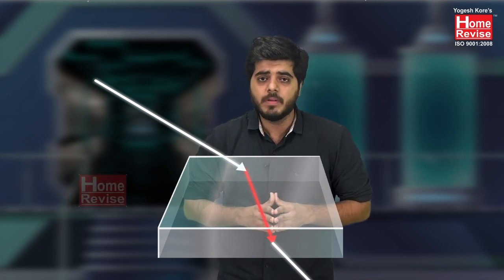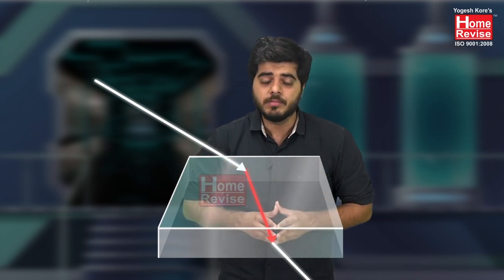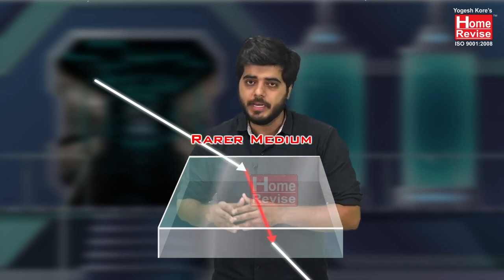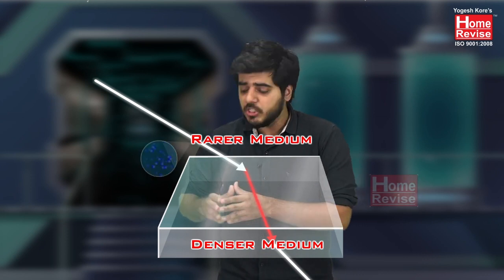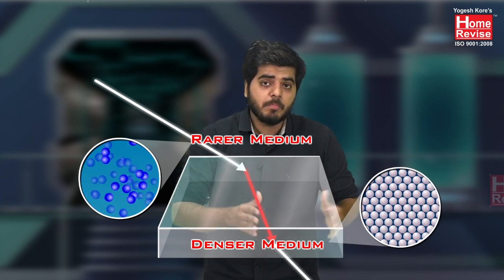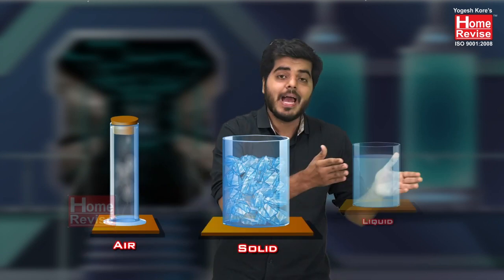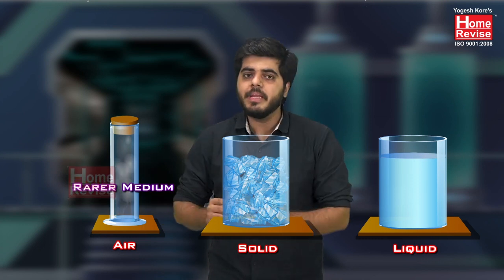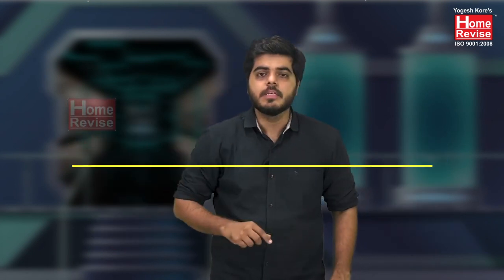When light bends while traveling from one transparent medium to another, what do we understand by transparent medium? Transparent medium is classified into two types: rarer medium and denser medium. Rarer medium is one in which particles are far away from each other, while denser medium is one in which particles are closely bonded. The basic example of rarer medium is air, and denser medium includes solids and liquids.